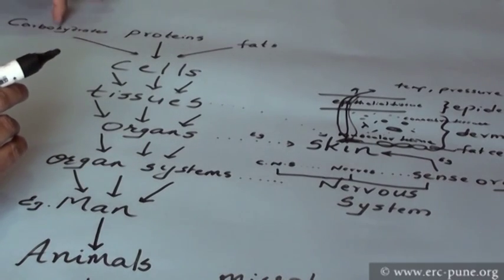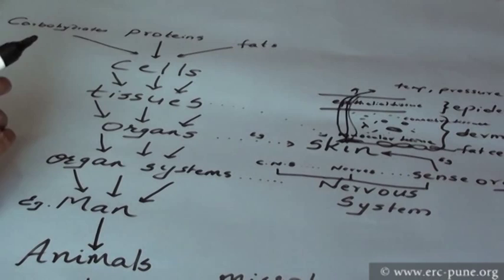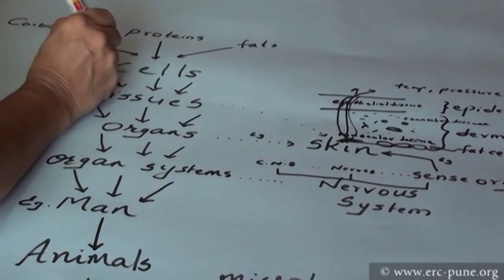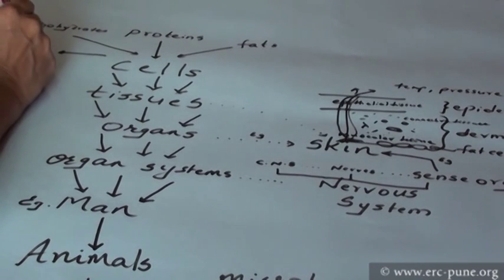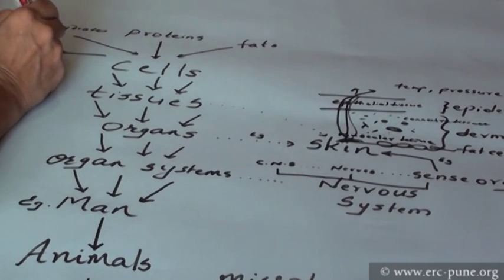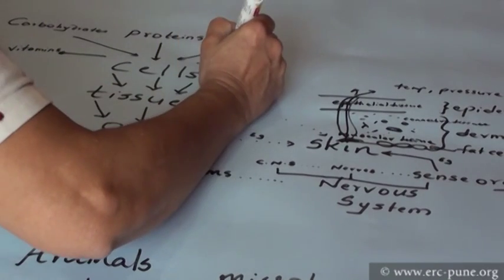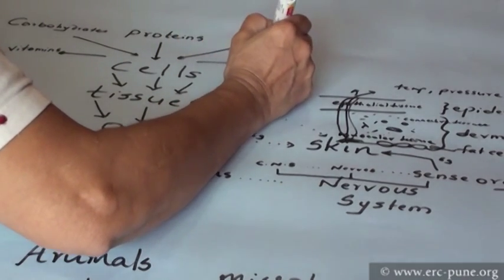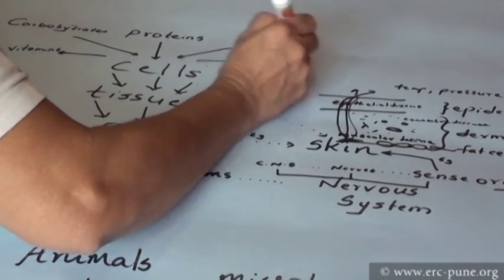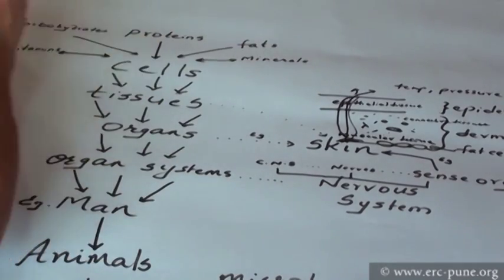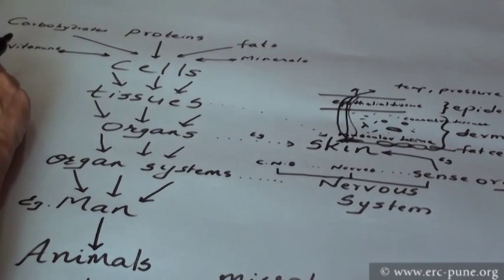These are the fats, proteins, and carbohydrates which make up each cell. Besides this, there are vitamins and minerals which also are a part of these cells which are useful for their own purposes, which we will learn about later on.